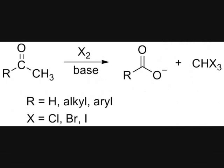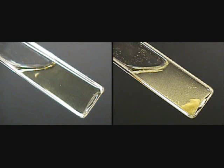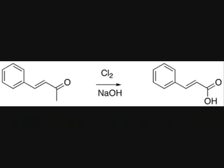In organic chemistry, the haloform reaction serves two purposes. Using iodine, one can test to see if a product contains a methyl ketone by seeing if iodoform is made. It is also used to turn methyl ketones into organic acids.